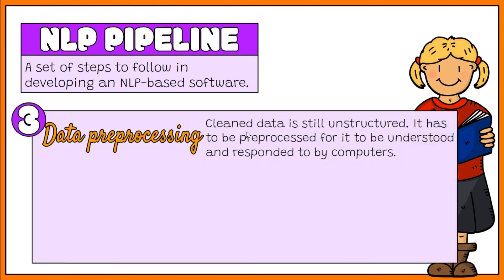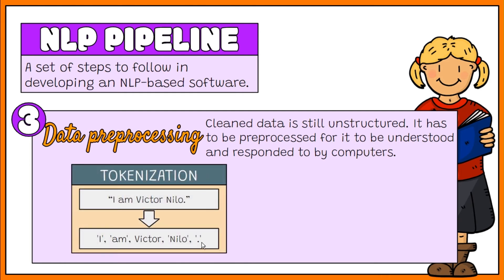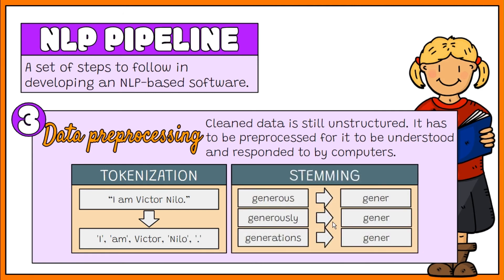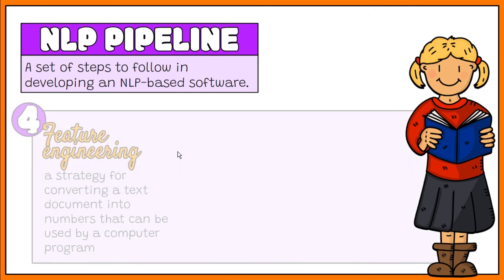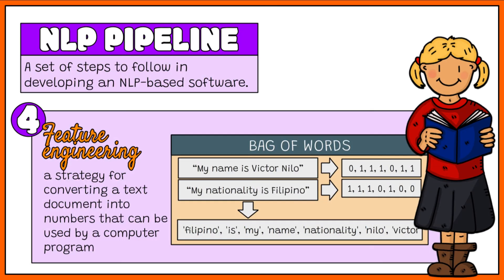Data Preprocessing: the data collected is still unstructured and has to be preprocessed for it to be understood, processed, and responded to by computers. Preprocessing techniques include tokenization and stemming. Feature Engineering means converting text data to numerical data. One of the techniques in feature engineering is Bag of Words, a strategy for converting a text document into numbers that can be used by a computer program.